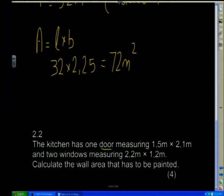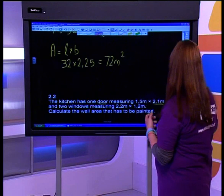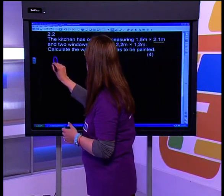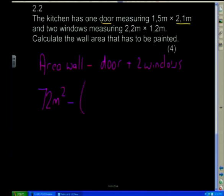The kitchen has one door and two windows. Calculate the wall area that has to be painted. Of course if we're painting the walls we don't want to paint the windows or the doors. We have already worked out the area of the walls — 72 meters squared — and we need to minus the door and the two windows. The area of the door is length times breadth: 1.5 times 2.1. And the two windows are 2.2 times 1.2 each.